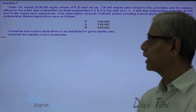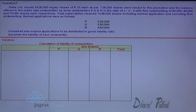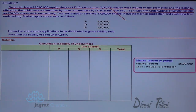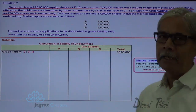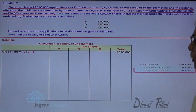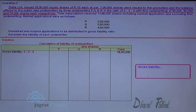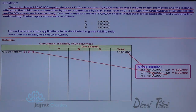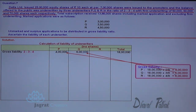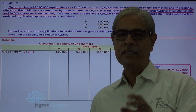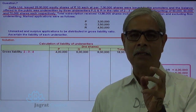Now let us determine the liability of each underwriter. For that, I prepare this working table. Total issue is 25 lakhs shares; shares issued to promoters are 7 lakhs; shares issued to public and underwritten are 18 lakhs. The liability is taken in the ratio of 2:3:4, so gross liability is distributed accordingly. That gives 18 lakhs × 2/9 for P, 18 lakhs × 3/9 for Q, and 18 lakhs × 4/9 — so 8 lakhs — is the liability of R. This is the commitment they have made under the underwriting agreement.